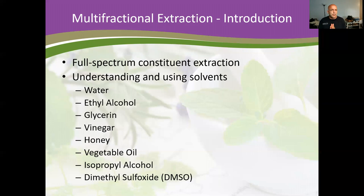The solvents we're going to be using are water, ethyl alcohol — ETOH, grain or sugarcane — or the highest percentage alcohol you can get, glycerin, vinegar, honey, vegetable oil, and isopropyl alcohol — obviously not for internal use, but we're going to do an external topical alcohol salve. We will also at least discuss DMSO. These are both solvents and carriers — the menstruum we'll use to extract constituents from the herb, but also the carrier for that herb when we're done.